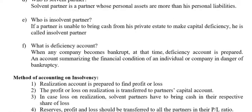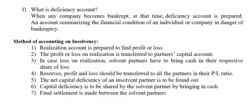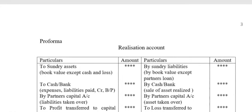Now, the methods of accounting on insolvency. Step 1: Realization Account is prepared to know the profit or loss. Step 2: The profit or loss on realization is transferred to partners' capital account. Step 3: In case of loss on realization, solvent partners have to bring cash in their respective shares of loss. Step 4: Reserves and profit and loss should be transferred to all partners in their profit and loss ratio. Step 5: The net capital deficiency of an insolvent partner is to be found out. Step 6: Capital deficiency is to be shared by the solvent partners by bringing in cash. Finally, the settlement is made between the solvent partners.